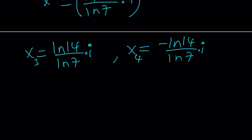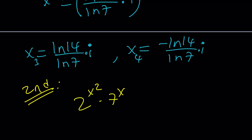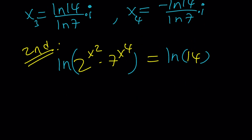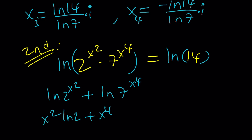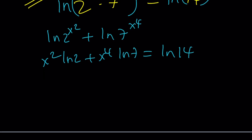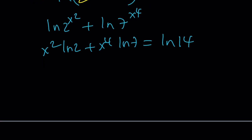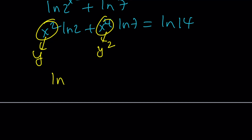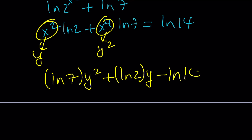Let's proceed with the second method. Taking ln of both sides of the original equation — it's a product — and bringing the exponents down, we get x squared · ln 2 plus x to the fourth · ln 7 equals ln 14. Setting x squared equal to y (so x to the fourth becomes y squared) turns this into the quadratic equation: ln 7 · y² + ln 2 · y − ln 14 = 0.